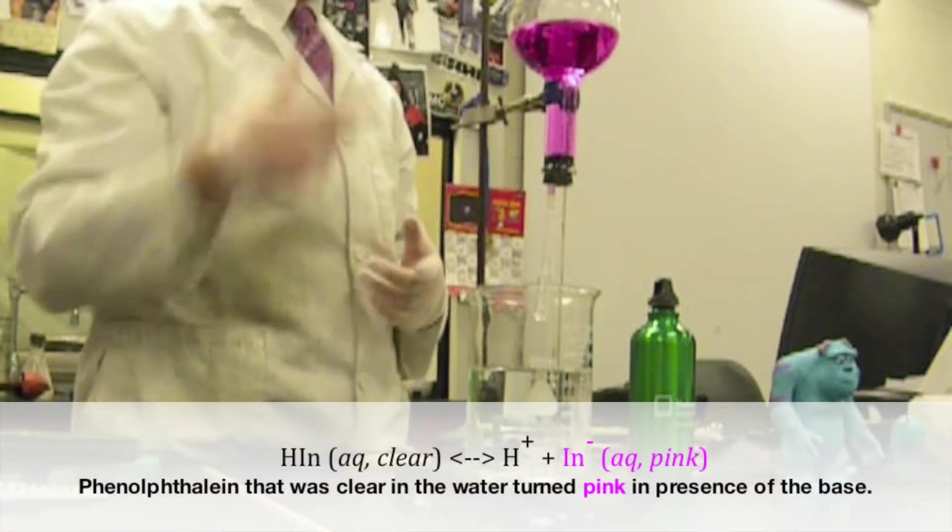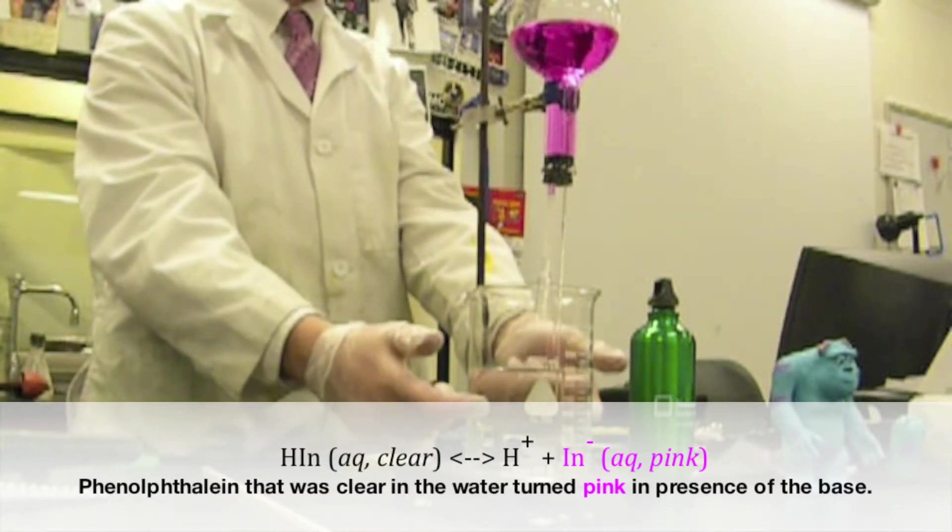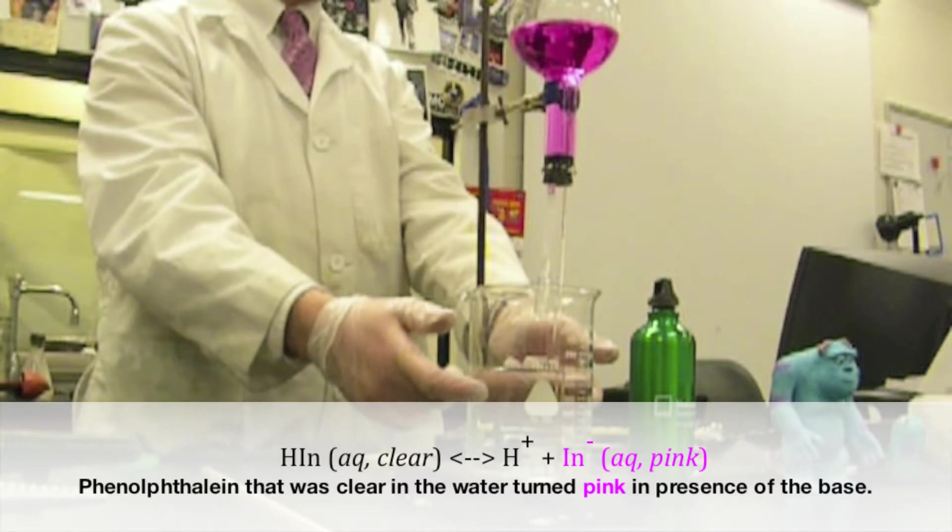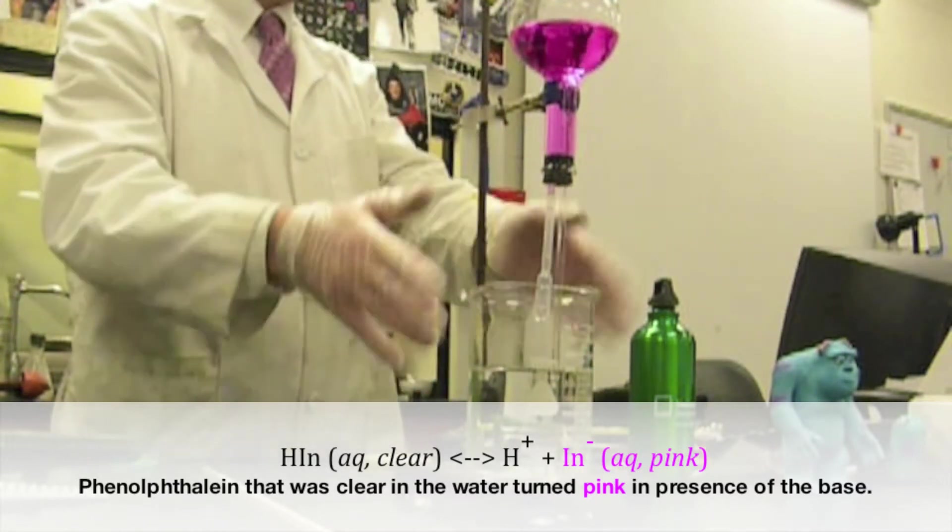The pink color is the phenolphthalein that was causing problems during the lab. I put phenolphthalein into the water here. Phenolphthalein is clear in water and in anything that's acidic, but anything that's neutral is also clear.